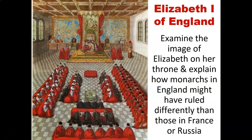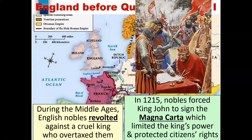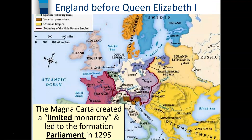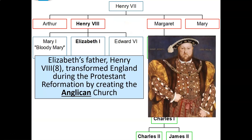Now let's look at England and Elizabeth the First. Unlike other nations in Europe, England had a limited monarchy rather than an absolute monarchy. During the Middle Ages, English nobles revolted against a cruel king who overtaxed them. In 1215, nobles forced King John to sign the Magna Carta, which limited the king's power and protected citizens' rights. The Magna Carta created a limited monarchy and led to the formation of Parliament in 1295 — a legislative group of commoners and lords who worked with the king to pass laws and taxes.